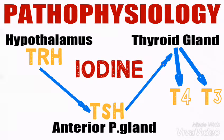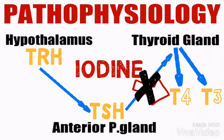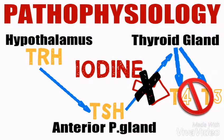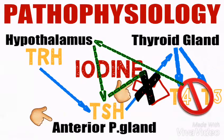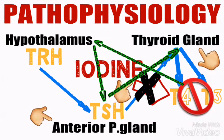Due to the absence of iodine, there will be no T3 and T4 produced by the thyroid gland, meaning a positive feedback signal will continuously be sent to the hypothalamus to release more thyroid-stimulating hormone — without knowing that there is actually an absence of iodine in the bloodstream. Unfortunately, the pituitary gland won't detect that, so it will be secreting more and more thyroid-stimulating hormone, which will cause the thyroid gland to work harder trying to secrete T3 and T4.